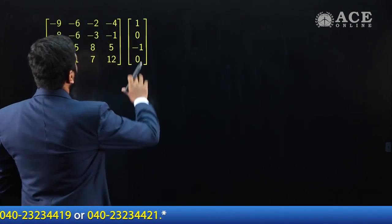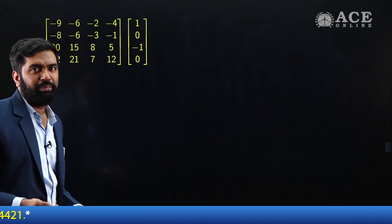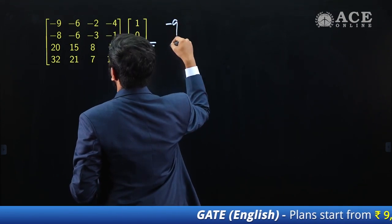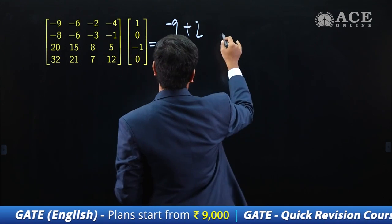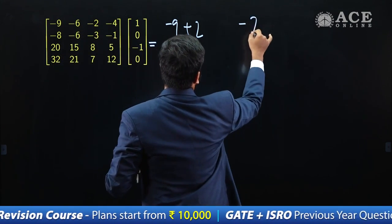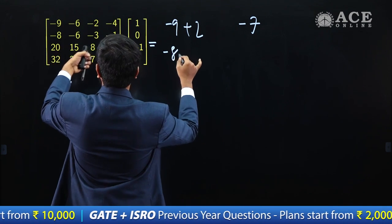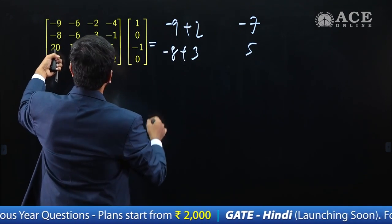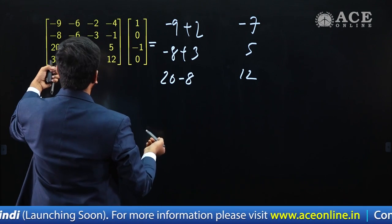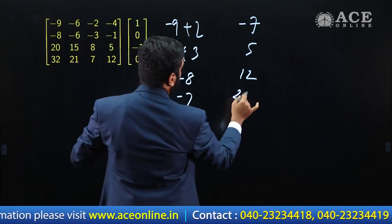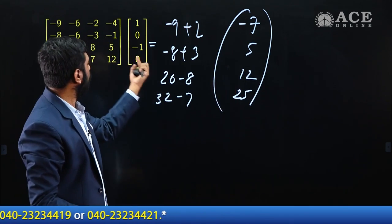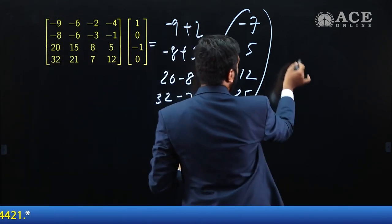Let's verify option B. Multiplying A by the option B vector: I get [−9+2, −8+3, 20−8, 32−7] = [−7, −5, 12, 25]. You cannot take any common factor out to recover the original vector X. So option B is eliminated — it is not an eigenvector.